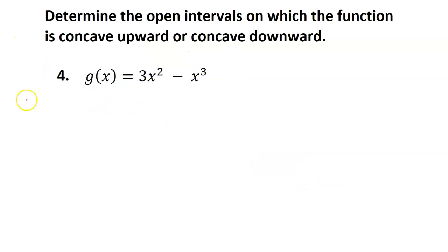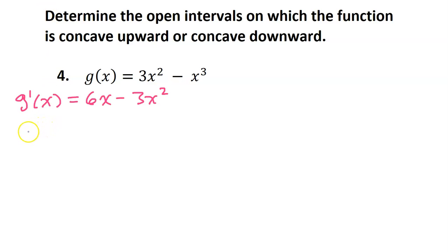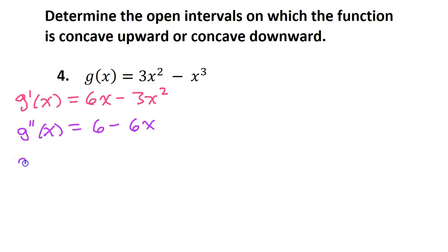That means we can use the second derivative to figure out on which intervals a function will be concave up or concave down. In order to find the second derivative, we must first get the first derivative. So G prime by the power rule will be 6x minus 3x squared. If we take the derivative again, we will have G double prime. The derivative of 6x is just 6, and the derivative of 3x squared will be 6x.